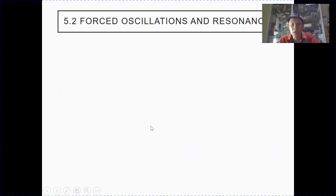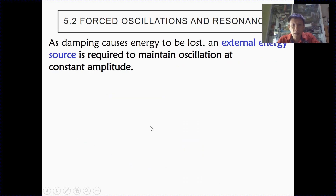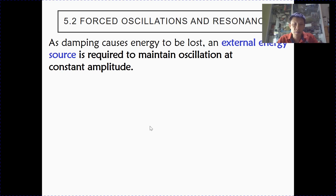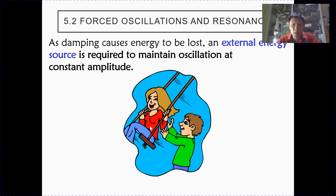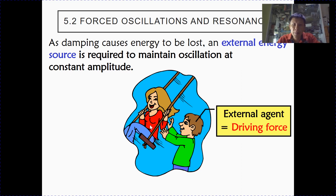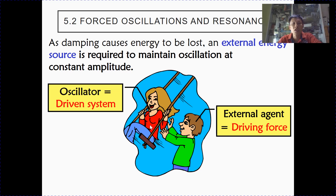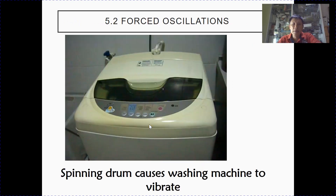Next, we are going to look at forced oscillation and resonance. Because damping causes the amplitude to decrease, in order to maintain the amplitude there must be a source of energy. For example, if you are on a swing and want to keep it going, somebody has to push it — this is the driving force, and the person on the swing is the driven system. Another example is the spinning drum causing a washing machine to vibrate; the spinning drum provides the external energy, while the washing machine is the driven system.